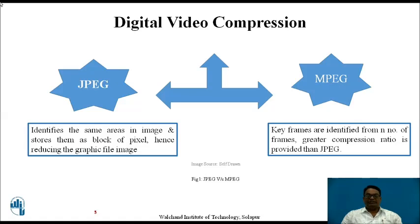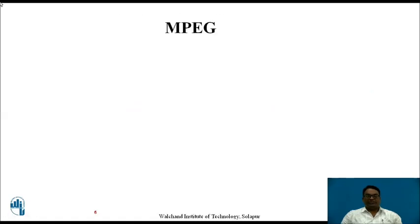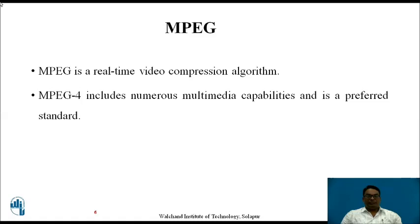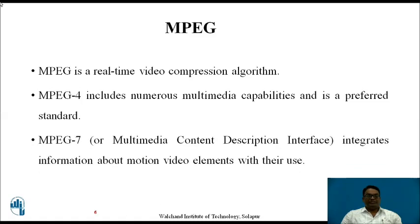In MPEG, keyframes are identified from N number of frames and a greater compression ratio is provided than JPEG. MPEG is a real-time video compression algorithm. MPEG 4 is generally used in multimedia where digital audio and video coding and decoding is done, and it is the preferred standard. MPEG 7 is generally used for interfacing different audio and video formats for different instruments, and it integrates information about motion video elements with their use.